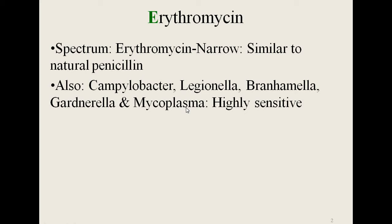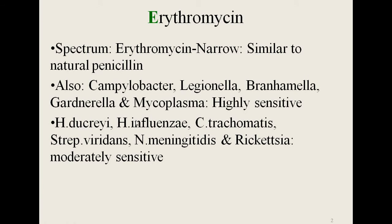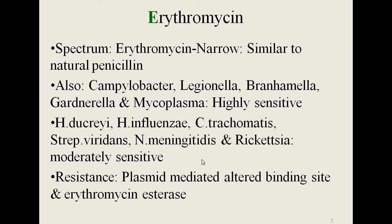Why was penicillin not effective against Mycoplasma? Because Mycoplasma does not have a cell wall, whereas erythromycin is effective because it acts at the 50S bacterial ribosomal sub-unit. Haemophilus ducreyi, Haemophilus influenzae, Chlamydia trachomatis and Rickettsia are moderately sensitive to erythromycin. Bacteria develop resistance to erythromycin which is plasmid mediated by altered 50S ribosomal binding site and also production of an enzyme called erythromycin esterase.